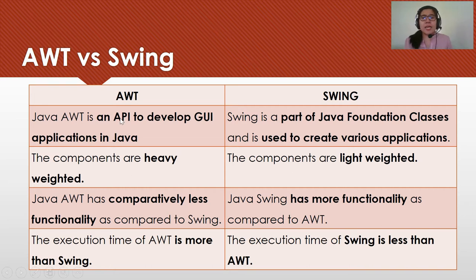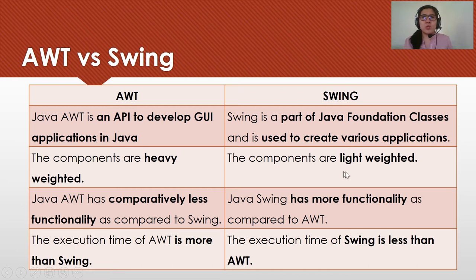For AWT, it is an API to develop GUI applications in Java. For SWING, it is part of Java Foundation Classes or JFC, which is used to create various applications. As to components, AWT are heavy-weighted while for SWING they are light-weighted. Java AWT has comparatively less functionality as compared to SWING.